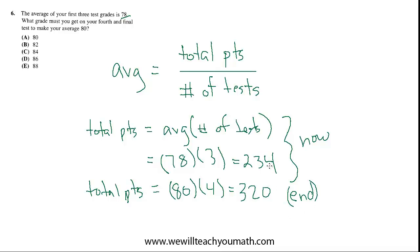So, if you currently have 234 and you need to get to 320, that's that difference. Whatever that difference in total points that you need to accumulate is, that's what you need to get. And the difference between 234 and 320 is 86. So, that's what you need.